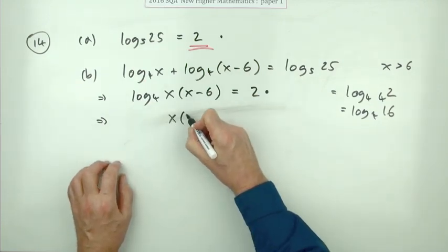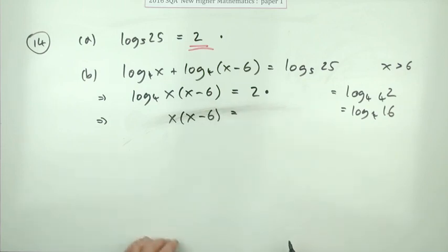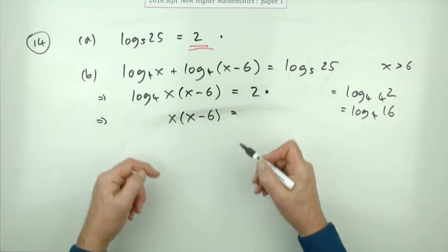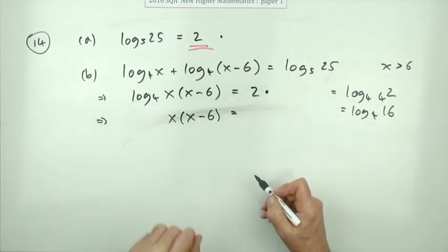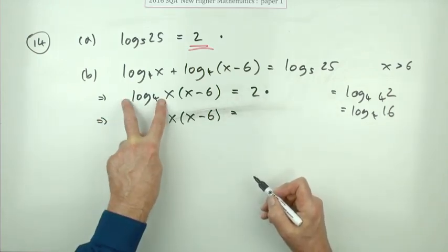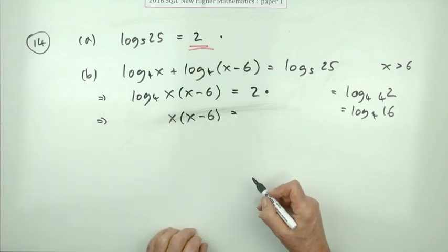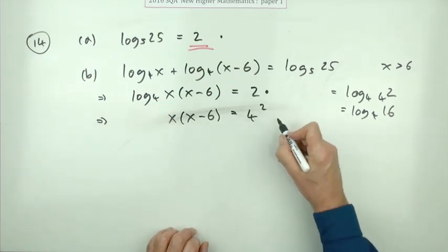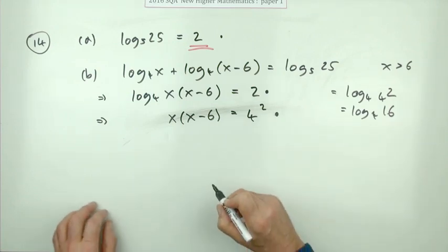You're solving an equation, so apply inverses to remove functions you don't want. What's the inverse of log base 4? It's 4 to the power. So this becomes 4 to the power 2, which is the next mark.